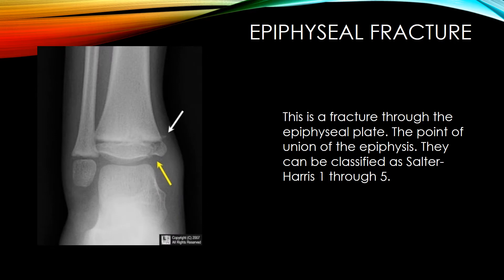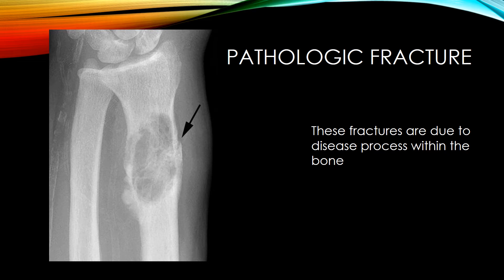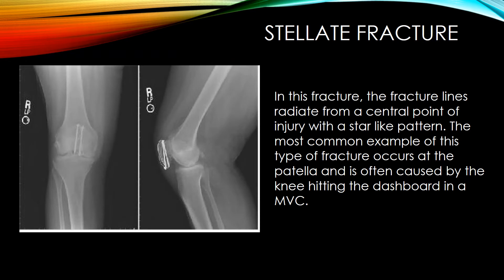An epiphysial fracture is a fracture through the epiphysial plate, the point of union of the epiphysis, and can be classified as Salter-Harris 1 through 5. A pathologic fracture is due to a disease process within the bone. A stellate fracture has fracture lines radiating from the central point of injury in a star-like pattern. The most common example occurs at the patella, often caused by the knee hitting a dashboard in a motor vehicle collision.